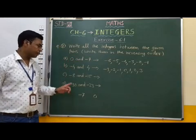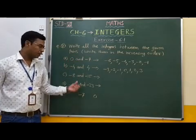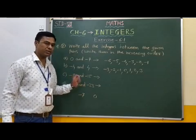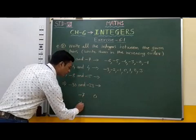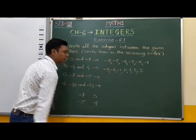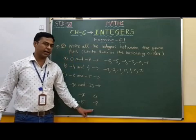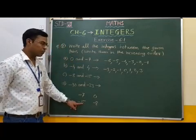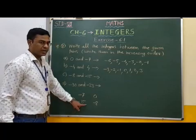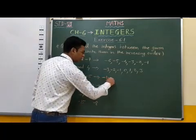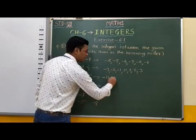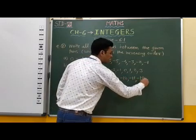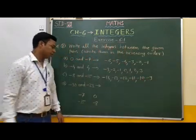Next, minus 8 and minus 15. Among these two integers, minus 15 is smaller and minus 8 is greater. Therefore, we first write minus 15, then minus 8, and we have to write the integers between them. After minus 15, minus 14 will come, then minus 13, minus 12, minus 11, minus 10, minus 9.